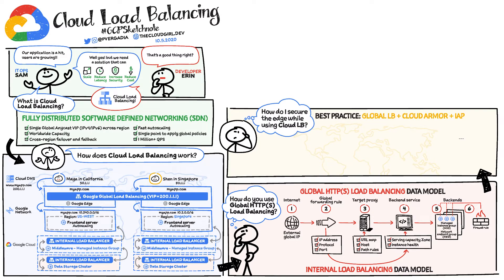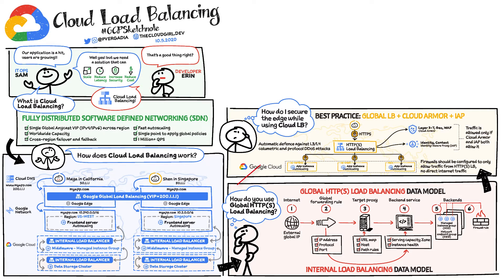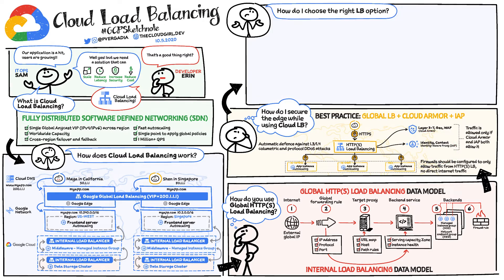Using global HTTPS load balancing, you get automatic defense against layer 3 and layer 4 volumetric DDoS attacks. And as a best practice, use Cloud Armor for layer 3 to layer 7 application-level attacks, such as cross-site scripting, geo-blocking, or allowing. Identity-aware proxy and firewalls for authenticating and authorizing access to back-end services.